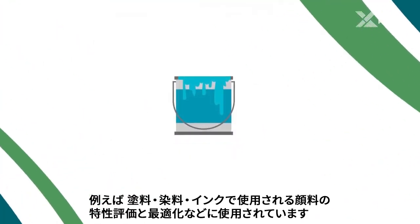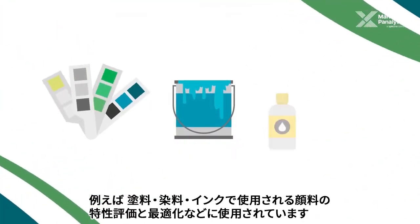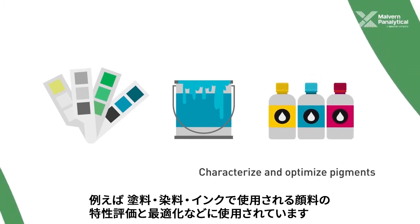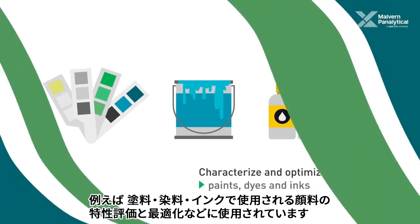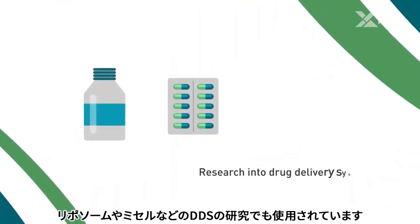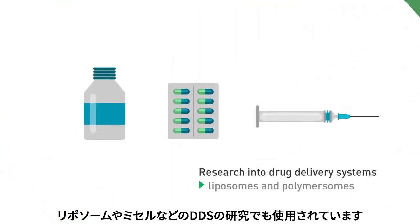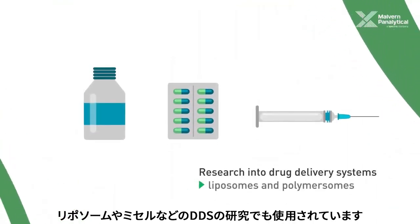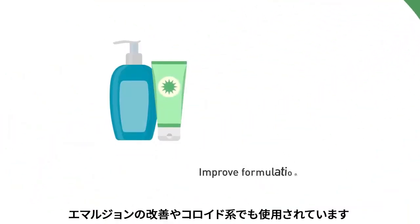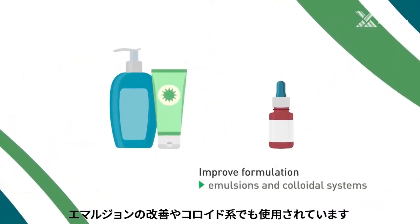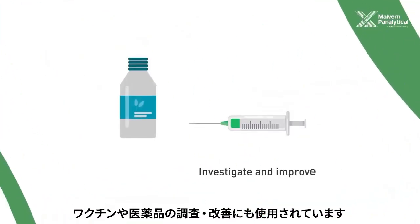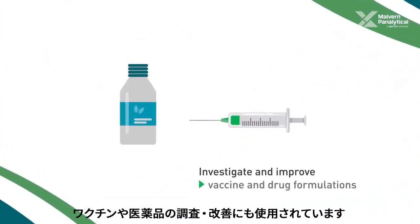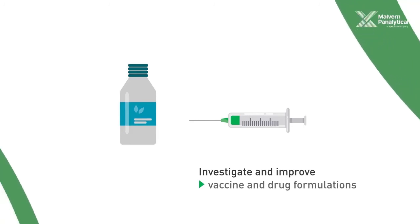For example, DLS is used to help characterize and optimize the pigments used in paints, dyes and inks, to advance research into drug delivery systems such as liposomes and polymersomes, to improve the formulation of emulsions and colloidal systems, and to investigate and improve vaccine and drug formulations, and many more.